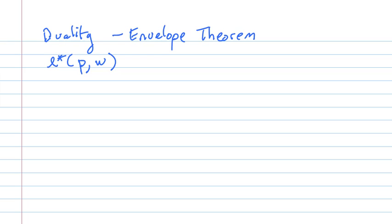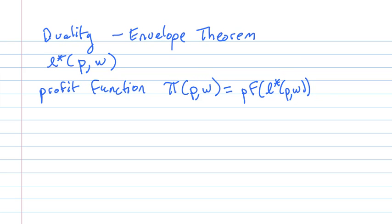And we're going to, from that, define the profit function, which is a function that gives profit directly as a function of the parameters P and W. It is defined to be PF of L star of PW minus W L star of PW. So the profit function says what the profits are as a function of the environment parameters P and W.